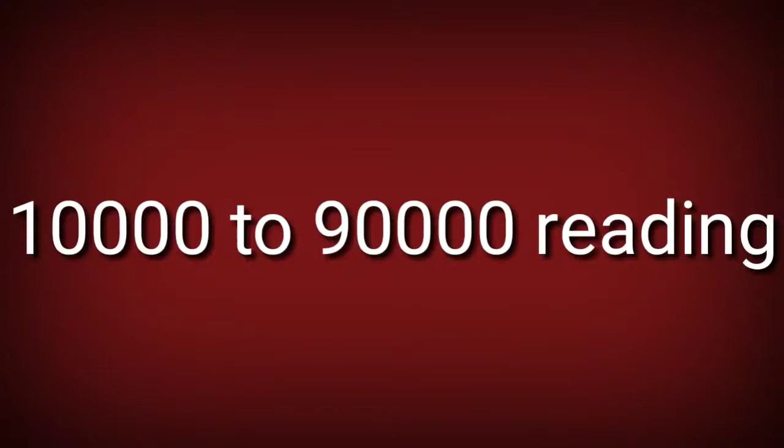10,000 to 50,000: 10,000 means 4-0 after 1. 20,000 means 4-0 after 2. 30,000 means 4-0 after 3. 40,000 means 4-0 after 4. 50,000 means 4-0 after 5.